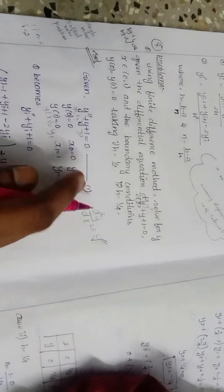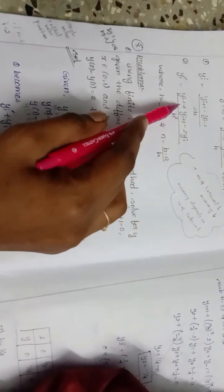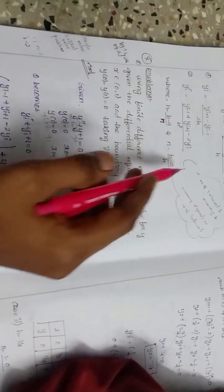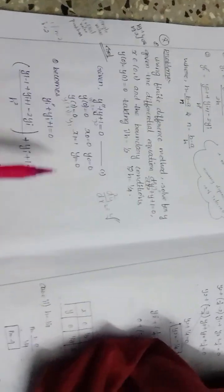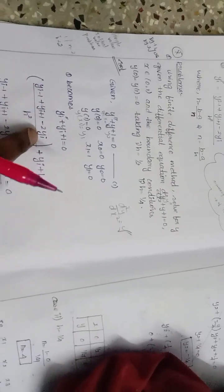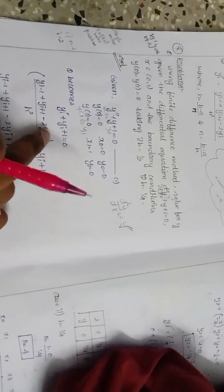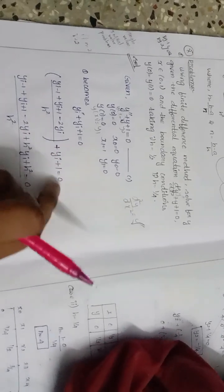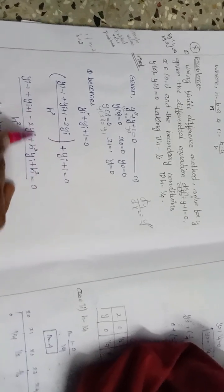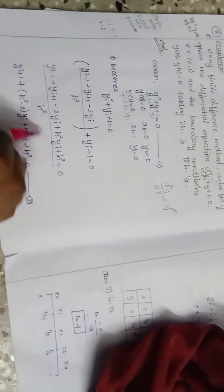The first equation: substituting the finite difference formula, y'' = (y_{i+1} + y_{i-1} - 2y_i) / h². So we get (y_{i-1} + y_{i+1} - 2y_i) / h² + y_i + 1 = 0. Simplifying, we multiply through by h².